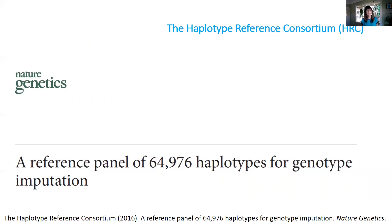The Haplotype Reference Consortium, or HRC, had two releases, with the last one in 2016. It includes information from more than 38,000 individuals, mainly of European ancestry, although because it also incorporates data from HAPMAP it includes some other ancestries. It reports around 40 million variants with a minor allele frequency going down to 0.1%. However, it does not include indels.